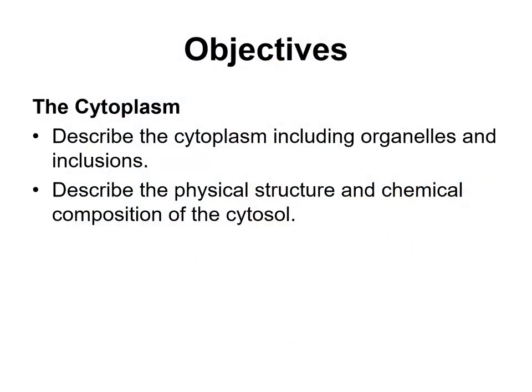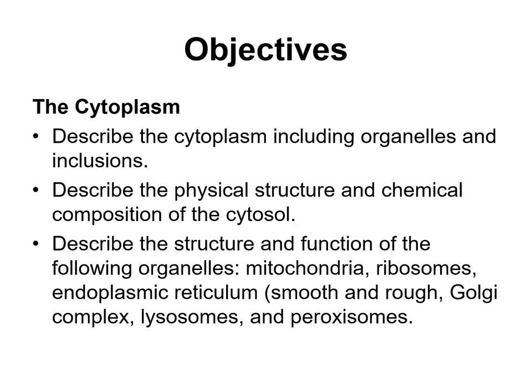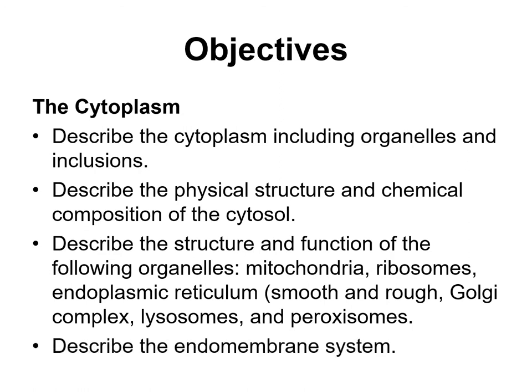The learning objectives of this screencast are as follows: describe the cytoplasm, including organelles and inclusions; describe the physical structure and chemical composition of the cytosol; describe the structure and function of the following organelles — mitochondria, ribosomes, smooth and rough endoplasmic reticulum, Golgi complex, lysosomes, and peroxisomes; and describe the endomembrane system.